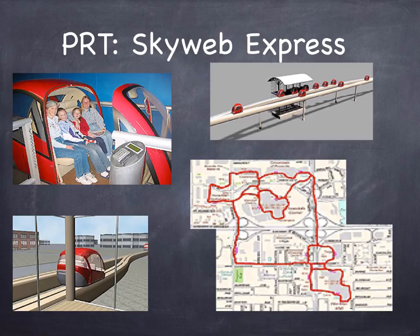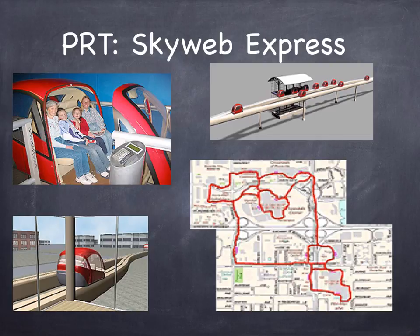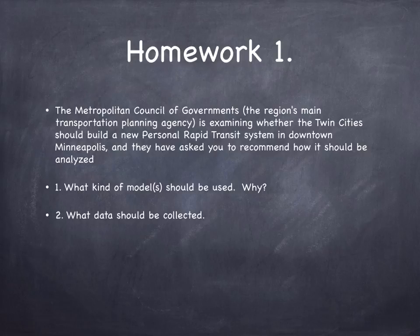We'll look at an example. Personal Rapid Transit is a proposed technology involving small cars that run on tracks above the street system, taking you from an origin to a destination without stopping — a personalized transit experience. The homework problem: the Metropolitan Council of Governments, the region's main transportation planning agency, is examining whether the Twin Cities should build a new personal rapid transit system in downtown Minneapolis. They've asked you to recommend how it should be analyzed: what kinds of models should be used, why, and what data should be collected?